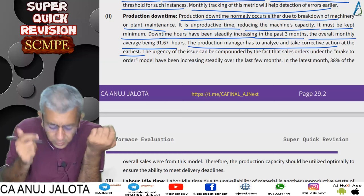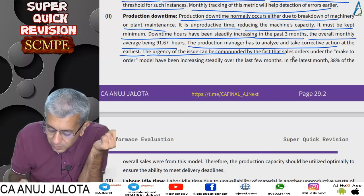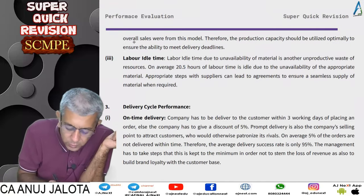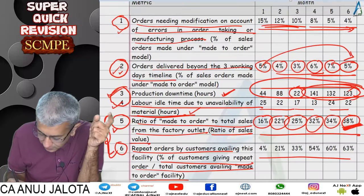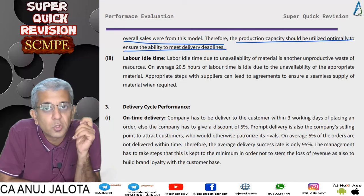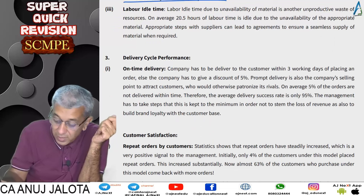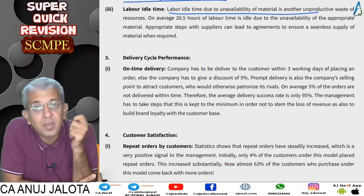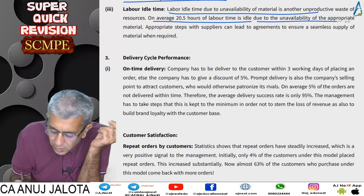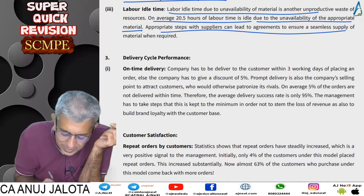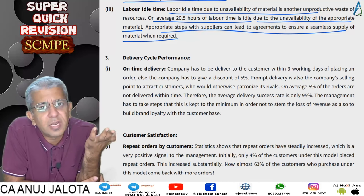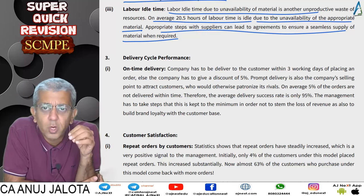The urgency of the downtime issue is compounded by the fact that made-to-order sales have been increasing steadily — reaching 38% of overall sales in the latest month. Production capacity must be optimally utilized to meet the three-day deadline. Labor idle time due to unavailability of materials averaged 20.5 hours. The company should arrange for a seamless supply of material — perhaps through a supplier agreement ensuring timely or advance delivery.